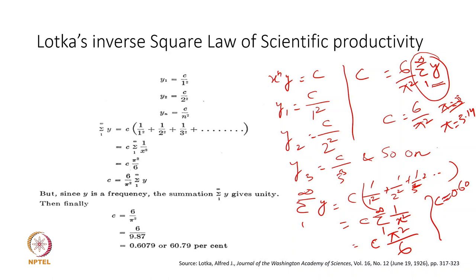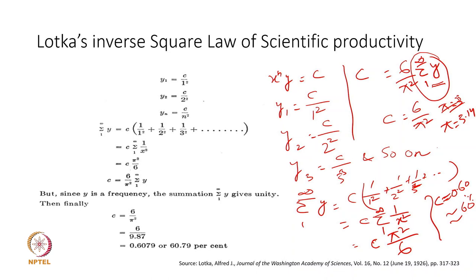Knowing that π ≈ 3.14, if we substitute the value of π we get the value of C as approximately 0.60. So the value of the constant is approximately 0.60, meaning about 60 percent. What Lotka proposed is that the proportion of all contributors who contribute a single item should be just over 60 percent.